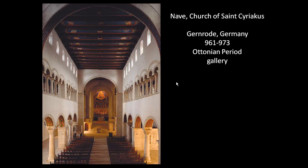Take note of the arcade: it's unique in that it's not all columns but has an alternating pier inserted — column, pier, column, pier. A pier is essentially a square column. Art historians say this alternation affects the visual rhythm, which is the repeating of similar visual elements that tracks the eye. Normally all columns would lead the eye toward the apse and altar. By inserting the pier, the visual rhythm is broken and a vertical emphasis is created, which some historians say encourages the viewer to take note of the new gallery element.